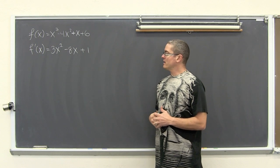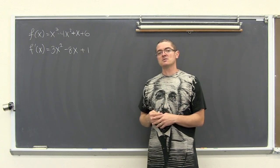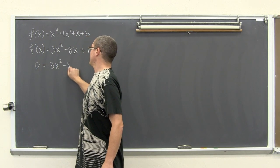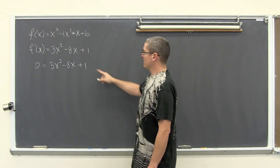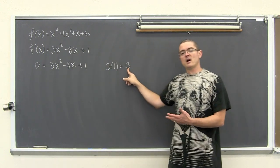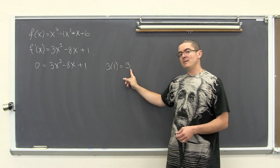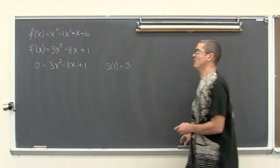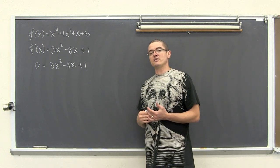We want the derivative to be zero — that is when the tangent lines are horizontal. So we set f prime of x equal to zero: 3x squared minus 8x plus 1 equals zero. We check if we can factor this. Multiplying the first and last term gives 3, and we need factors of 3 that also add up to negative 8. The answer is no, so this trinomial is not factorable. Since it is a quadratic, we will solve it using the quadratic formula.